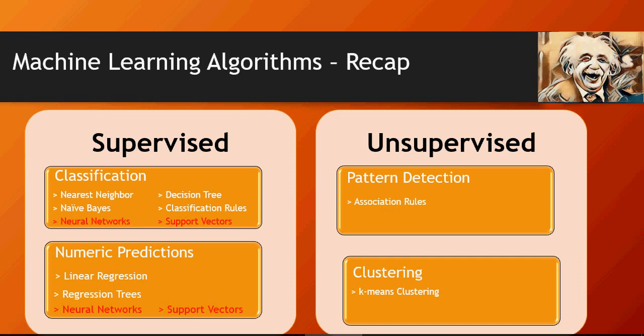Supervised learning models have a target variable — something which you want to predict or analyze — and there are a lot of predictors or independent variables which help classify or predict the target value. For unsupervised learning we'll talk about it later; here in this video we're going to focus on linear regression.